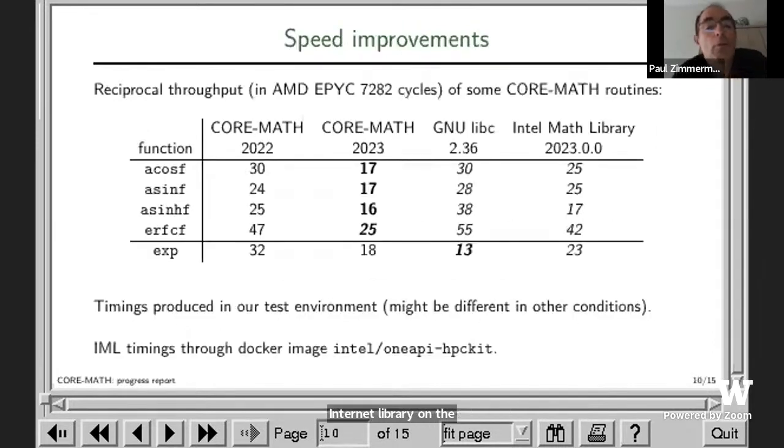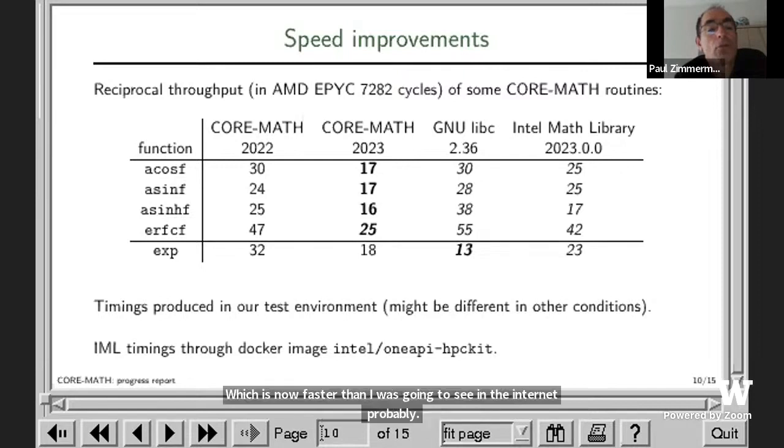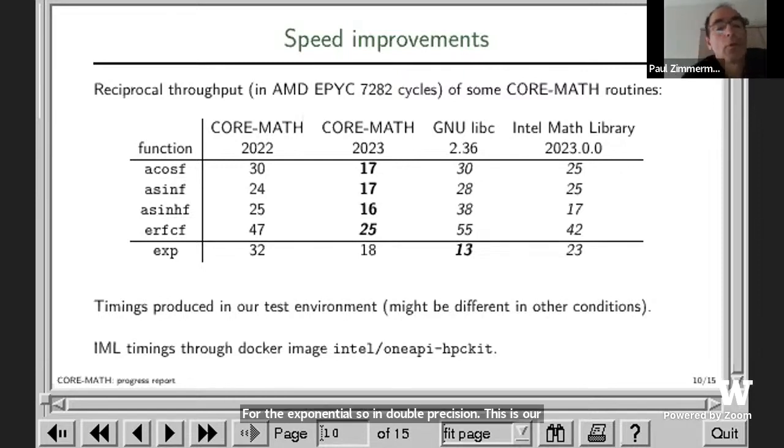From now I will speak about improvements from this year, from 2023. Here is an excerpt of some functions. In single precision, the arccosine reciprocal throughput decreased from 30 cycles to 17 cycles, which is now faster than the Newlib and the Intel library. For the exponential in double precision, this is the last row of this table. We decreased from 32 cycles to 18 cycles. These timings are produced in our test environment, which is also used by LLVM libc to get timings. The Intel timings are produced using the Docker image, which might give some artifacts.